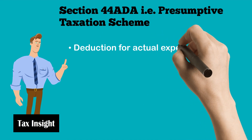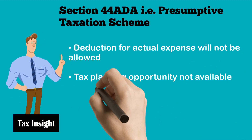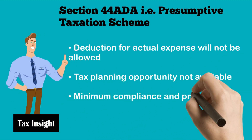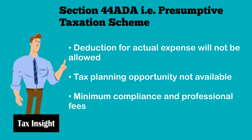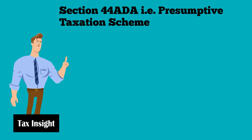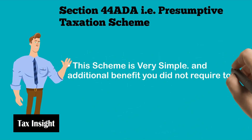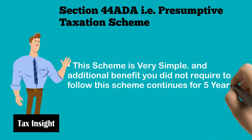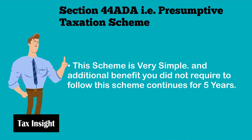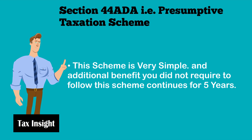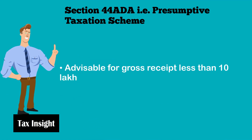Deduction for actual expenses will not be allowed, since 50% of total receipt is already allowed as deduction, so no separate deduction for actual expenses will be allowed. Tax planning opportunity is not available, but there is minimum compliance and professional fees. The scheme is simple — you can file the return by yourself or by taking the help of an accountant with minimum fees. Also, you don't need to follow this scheme for a continuous period of 5 years, which is applicable under section 44AD for business.